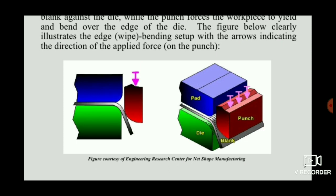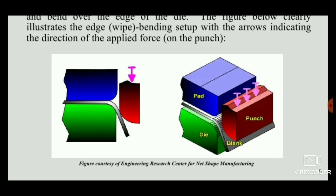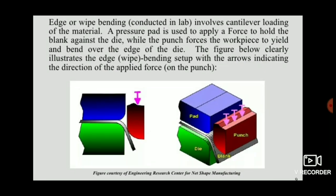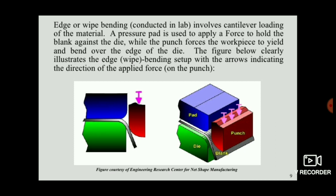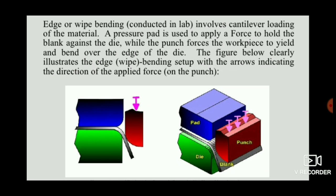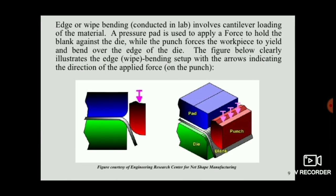The blank is generally placed in the die. Over the blank, a pad is placed to support it. After that, a punch is used to wipe the sheet, applying force over the blank to get the required angle.